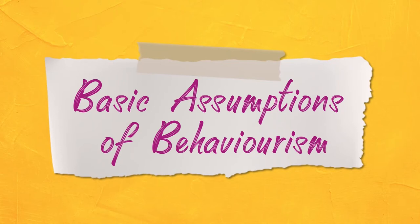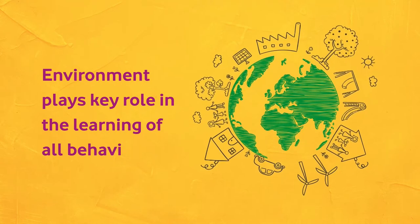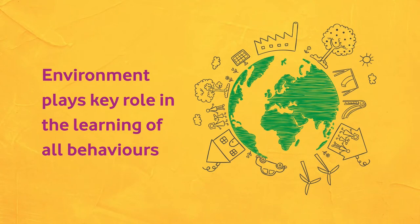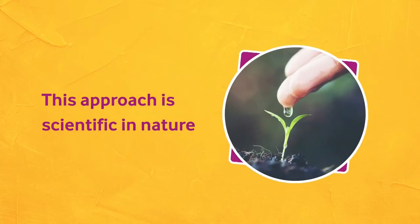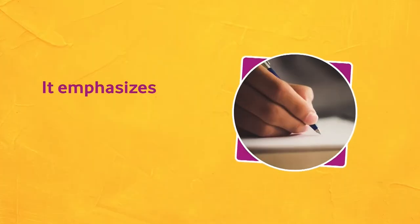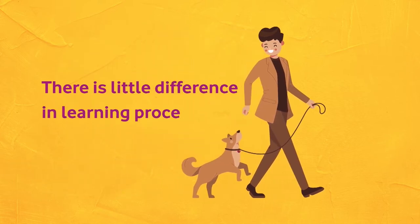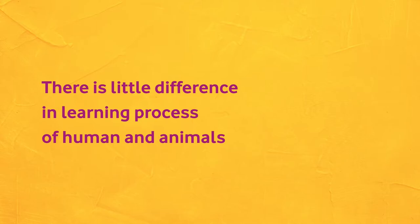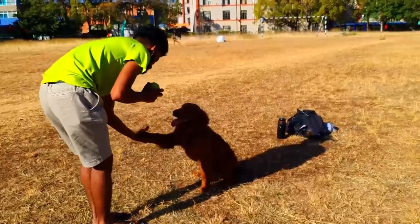There are some basic assumptions of behaviorism as an approach to learning. The first is that environment plays a key role in the learning of all behaviors — whatever learning takes place, interaction with the environment is a necessary aspect. Second, this approach is scientific in nature, meaning measurement and observation of behavior are important, with emphasis on observable behavior. The next assumption is that there is little difference in the learning process of humans and animals, as evident from many behaviorist experiments where animals were used and their behavior was modified through various laws of learning.